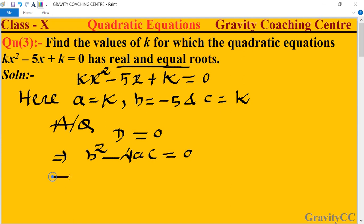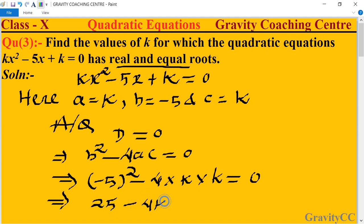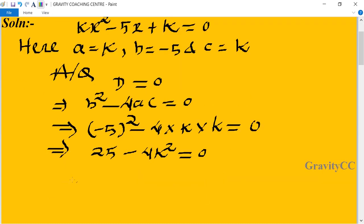This implies that (-5)² - 4 × a × c, where a = k and c = k, equals 0. This implies that (-5)² means 25 - 4k² = 0.